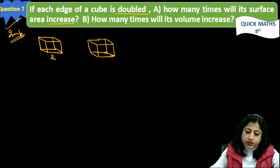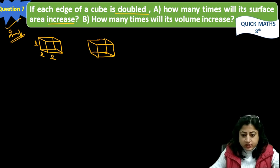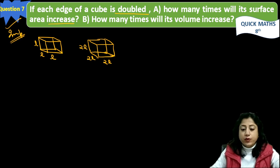For original cube, the side is suppose L, then this is L, this one is also L, this is also L. For the new cube, each edge is doubled - edge means side. So it will be 2L, it will be 2L, it will be 2L, means side becomes 2L.